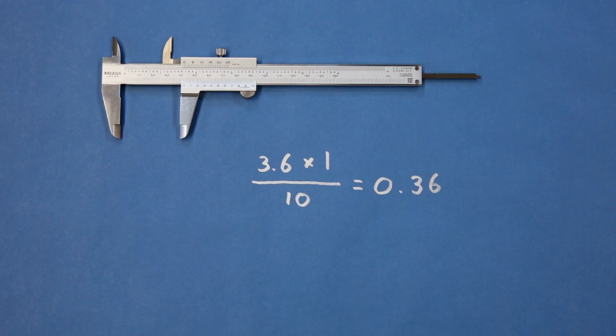multiply your reading by the smallest division on the main scale, 1 millimeter in this case, divided by the number of large divisions on the vernier scale, which there are 10 of for my calipers.